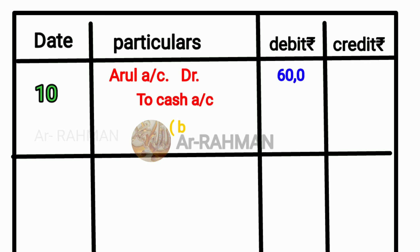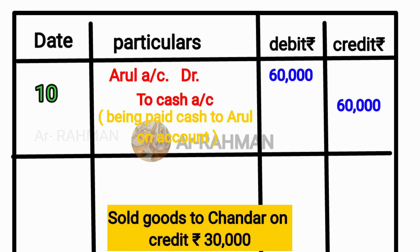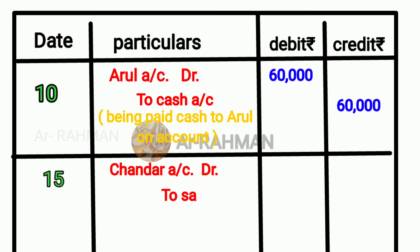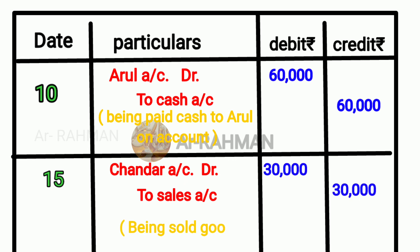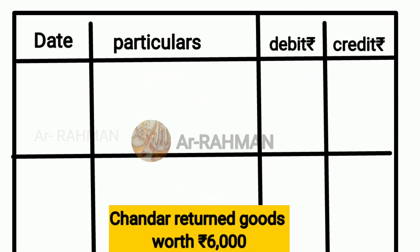To cash account. Sales account — Chander account Dr, to sales account. The value is Rs.30,000 and here also Rs.30,000. Narration: being sold goods to Chander on credit.